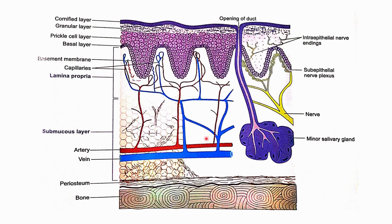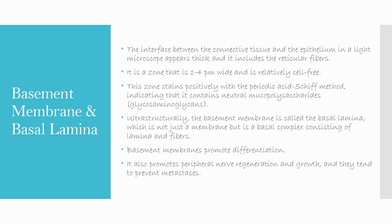This is the general structure diagram showing the opening of ducts, nerves going in, triapithelial nerve endings, the cornified layer, the granular layer with granules, stratum corneum, and stratum granulosum. There are prickle cells, the basal cell or basement membrane, capillaries of blood vessels, lamina propria, submucosa containing mucous glands, arteries, veins, minor salivary glands, nerves, and then the periosteum and bone.